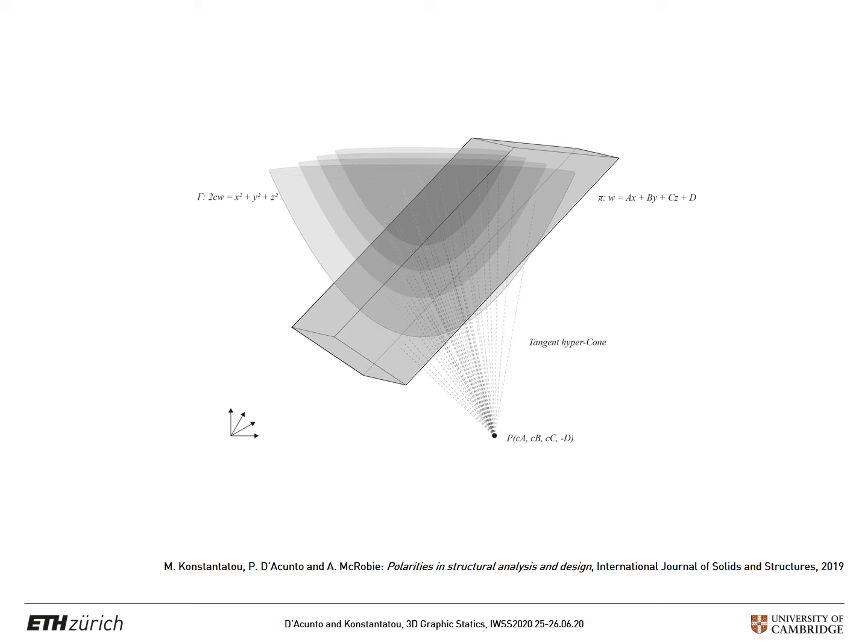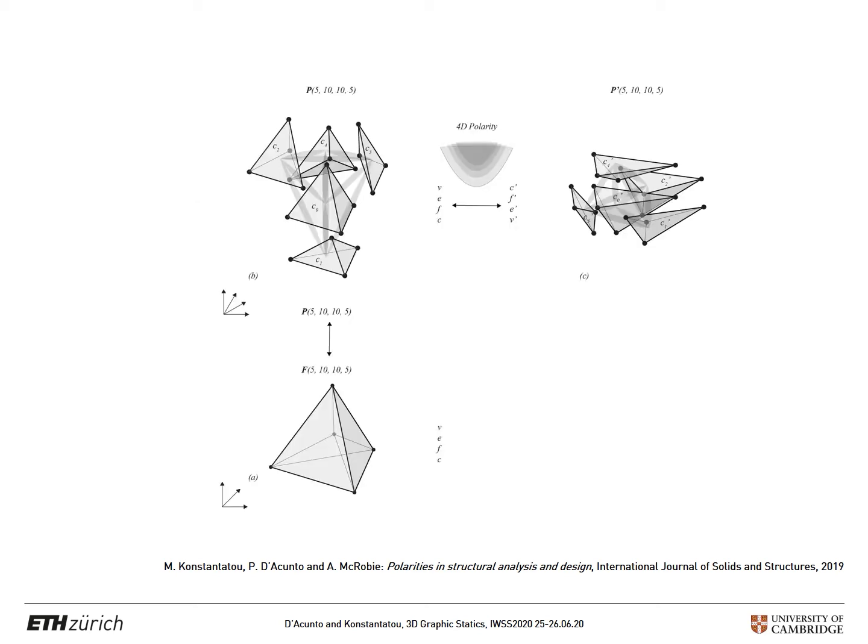So when it comes to four dimensional space, each vertex, which has some specific coordinates, can be mapped to a hypercell through a hyperparaboloid of revolution. So in this case, we can see the equations. If we do that, we derive the reciprocal 4-polytopic stress function. And then we can just project those down orthographically to derive the form and the force diagram.